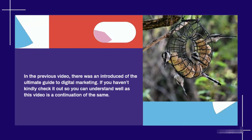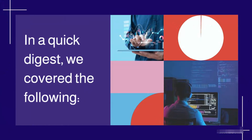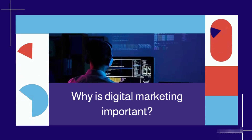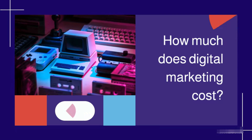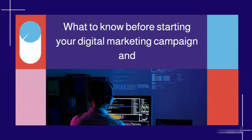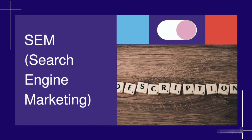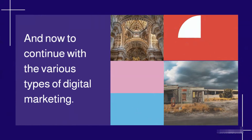In the previous video there was an introduction of the ultimate guide to digital marketing. If you haven't, kindly check it out so you can understand well, as this video is a continuation. In a quick digest, we covered the types of digital marketing, why digital marketing is important, how much it costs, what to know before starting your campaign, and search engine marketing. Now to continue with the various types of digital marketing.